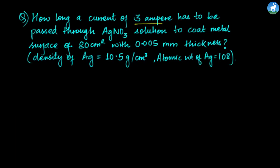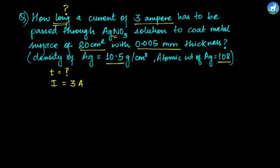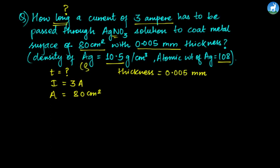Second question: How long must a current of 3 amperes be passed through silver nitrate solution to coat a metal surface of 80 cm² with 0.005 mm thickness? The density of silver is 10.5 grams per cm³, atomic weight of silver is 108. Given: area = 80 cm², thickness = 0.005 mm, density = 10.5 g/cm³, atomic weight = 108.